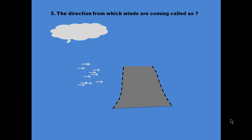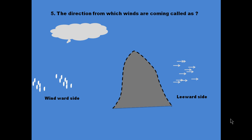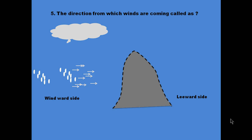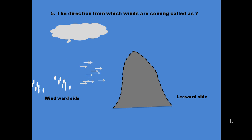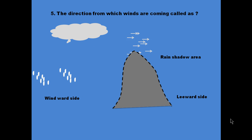The last question asks: the direction from which weeds are coming is called what? The answer is the windward side. The windward side is where the wind is coming from, and the leeward side is where it is moving toward. The windward side receives more rainfall because moisture in the wind condenses there. If there is a mountain or obstruction in between, the leeward side gets very less rainfall and is called the rain shadow area.